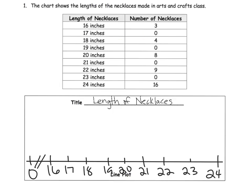Now we're ready to start putting our data into our line plot. We see that three people have 16 inch necklaces, so one, two, three. Nobody has a 17 inch but four people have an 18 inch, so one, two, three, four. Nobody has 19 but we have eight people who have 20, so one, two, three, four, five, six, seven, eight. Then we have nobody for 21.